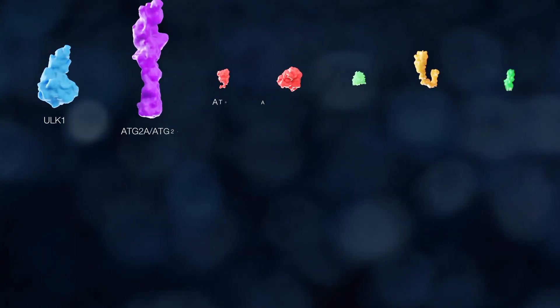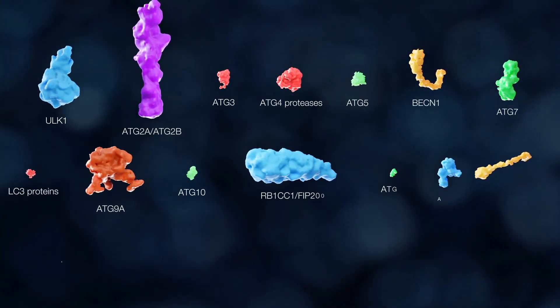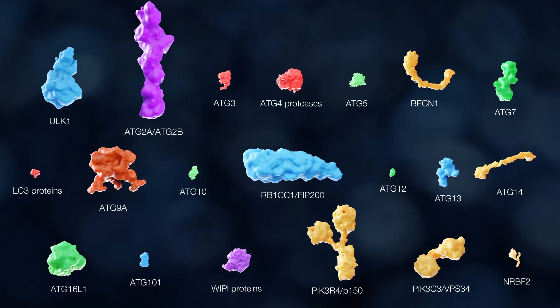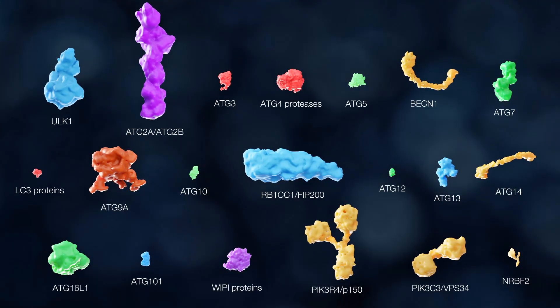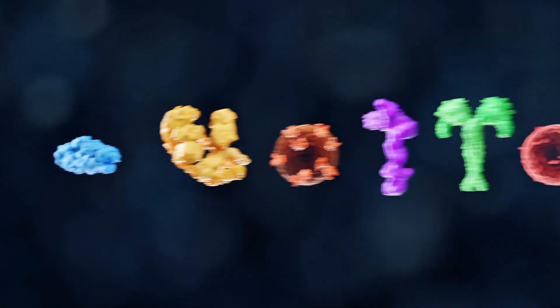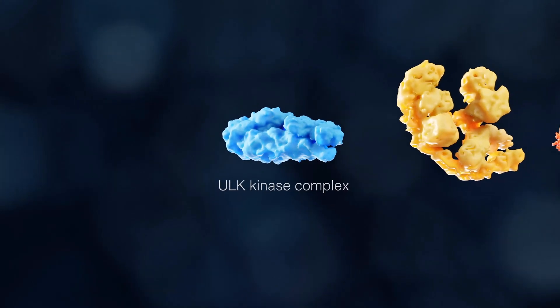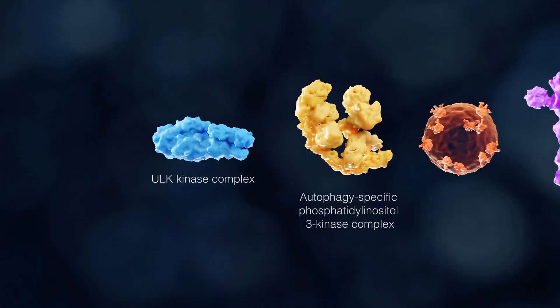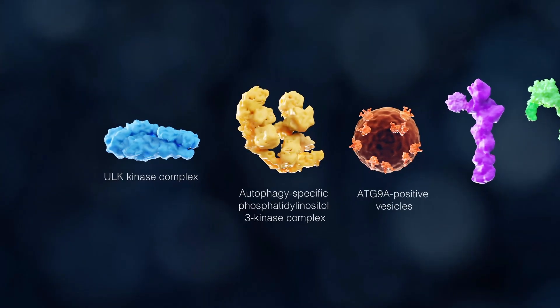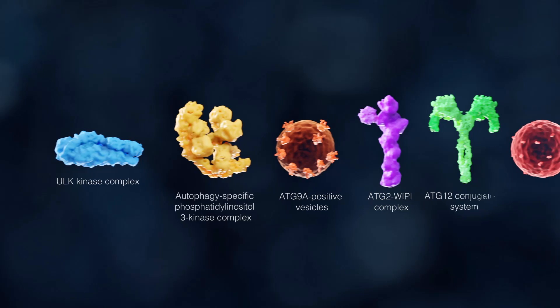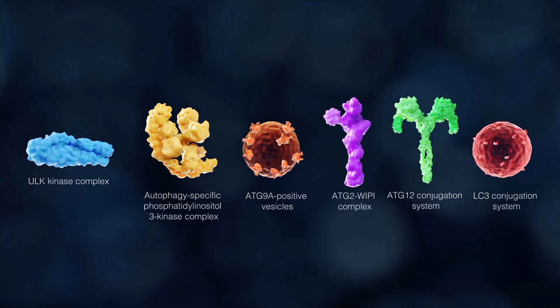Around 20 autophagy-related or ATG proteins compose the highly conserved core machinery that controls autophagosome biogenesis in all eukaryotes. The proteins encoded by these genes have been divided into six functional modules: the HULK kinase complex, the autophagy-specific phosphatidyl inositol 3 kinase complex, the ATG9A-positive vesicles, the ATG2-WP complex, the ATG12 and the LC3 conjugation systems.